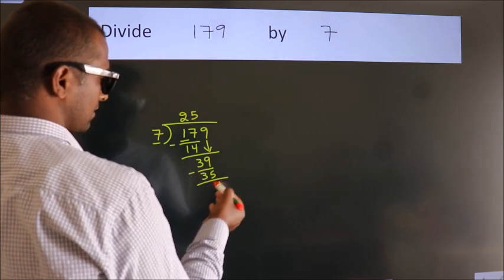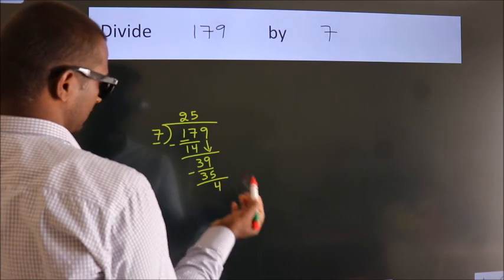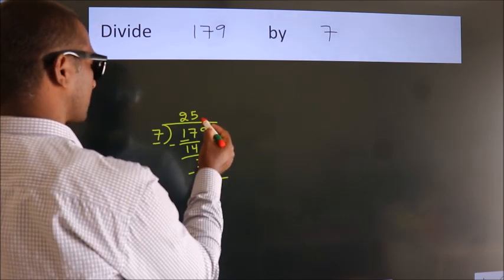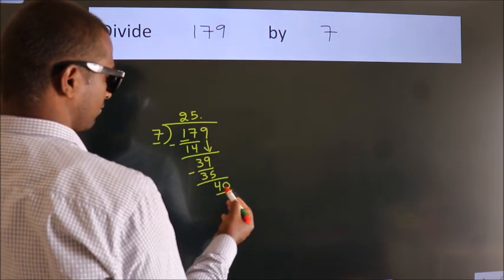After this, no more numbers to bring down. So what we do is put a dot and take 0. So 40.